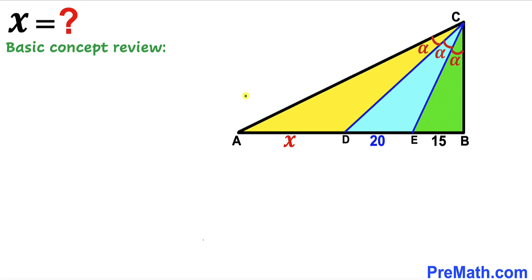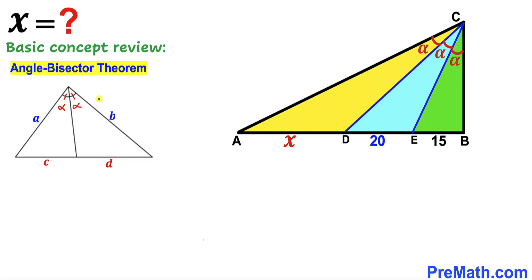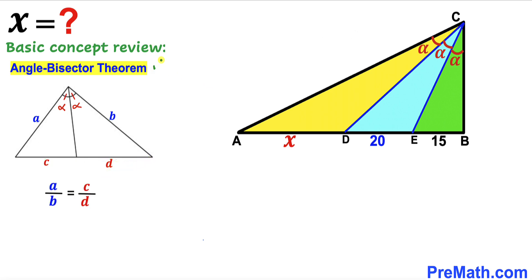Before we proceed, let's recall the angle bisector theorem. In a given triangle, if a segment is the angle bisector, it creates two congruent angles alpha and alpha. If this side length is A, this side length is B, this segment is C, and this segment is D, then according to the theorem: A divided by B equals C divided by D.